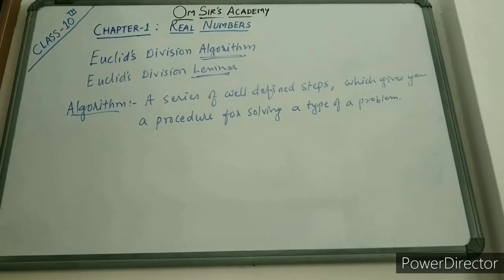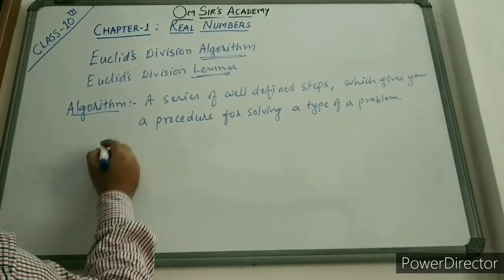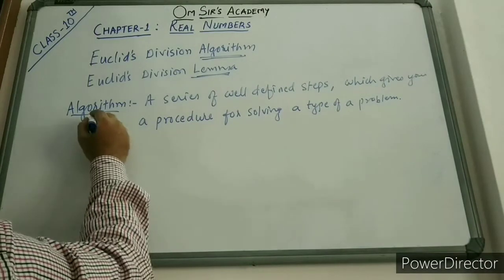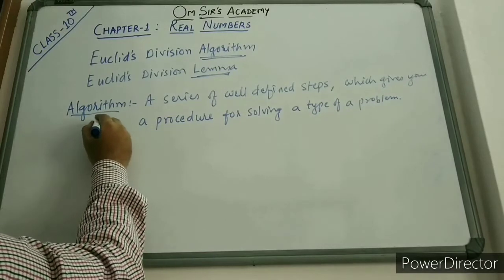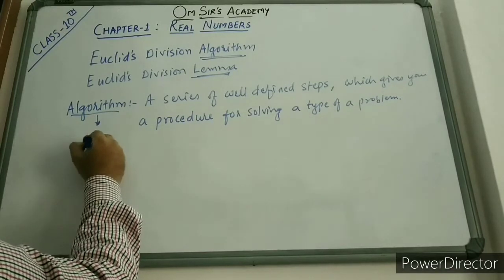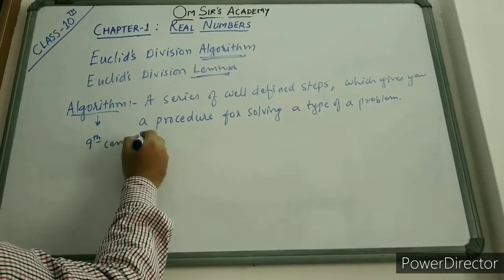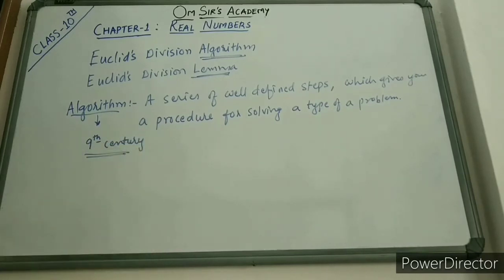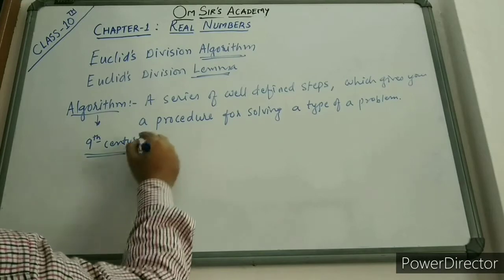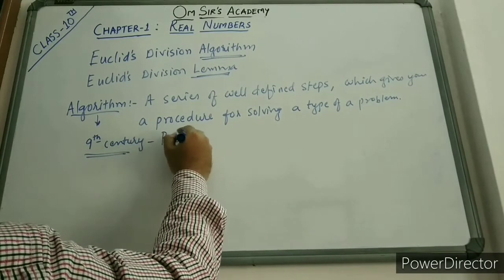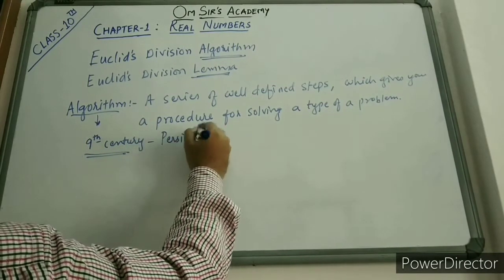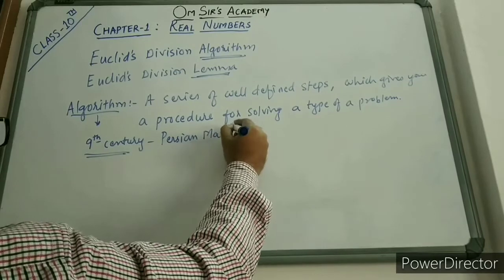The word 'algorithm' came from a 9th century Persian mathematician. These facts are asked in your objective part. He was a Persian mathematician who gave us this word 'algorithm'.